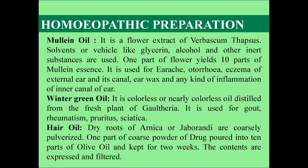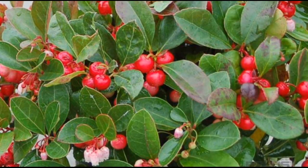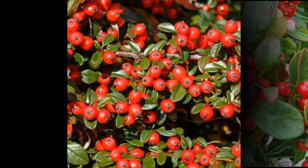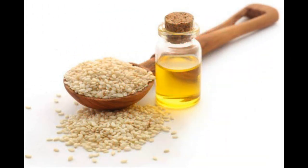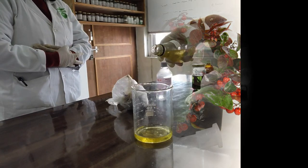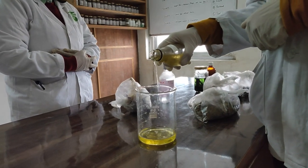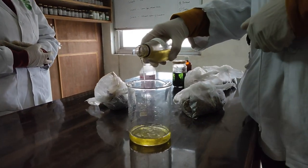Mulligan oil is useful for earache, otorrhoea, eczema of the external ear and internal canal, earwax, and any kind of inflammation of the inner canal of the ear. Wintergreen oil preparation is very simple — it is a distillation process. Fresh plant of Gaultheria is distilled with either sesame oil or olive oil. It is very useful in gout, rheumatism, pruritus, and sciatica.